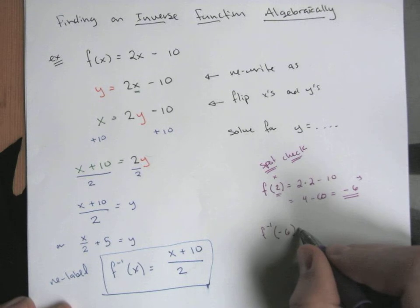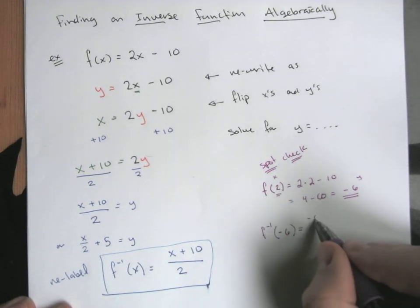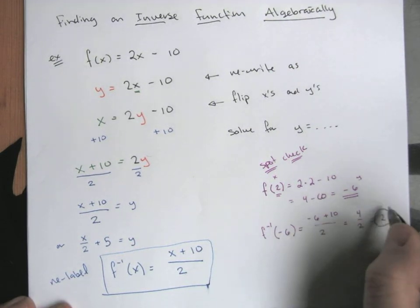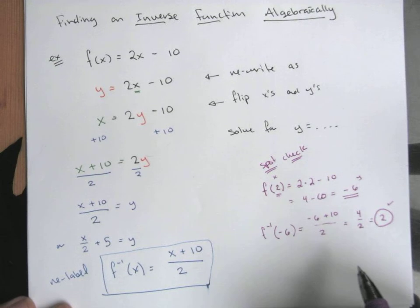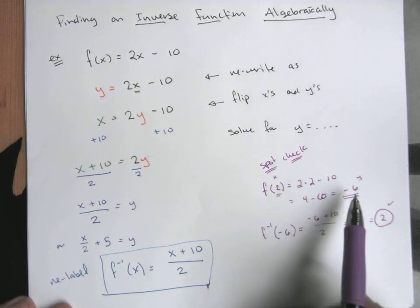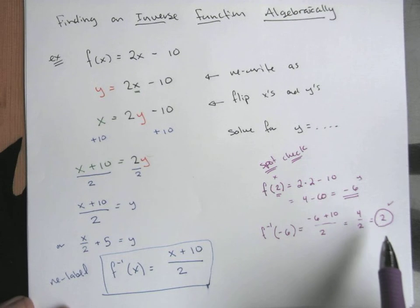The check is in my inverse function, if I put in negative 6 into my new formula, am I going to end up back at the 2 where I started? Let's check it. So negative 6 plus 10 all over 2, that's going to leave me with 4 over 2. Positive 4 over 2 does in fact get me back to positive 2. So I've just gone either 2 to negative 6, or in the inverse reversed it from negative 6 to 2.